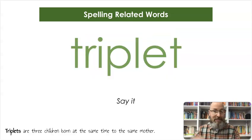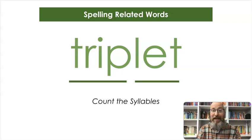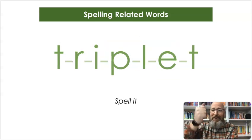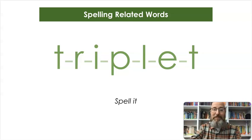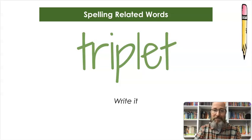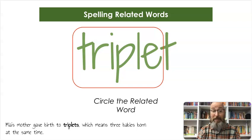Our next word is triplet. Triplets are three children born at the same time to the same mother. Count the syllables — triplet, triplet. Let's spell it: T-R-I-P-L-E-T, triplet. And let's write it. We're going to circle triple from earlier — that's the related word. Mia's mother gave birth to triplets, which means three babies born at the same time. That's a lot.